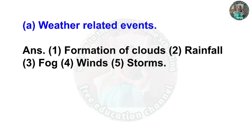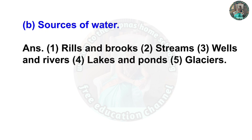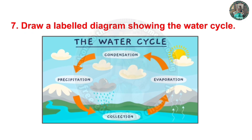Question six: Give any two examples of — A: Weather-related events: formation of clouds, rainfall, winds and storms. B: Sources of water: rills and brooks, streams, wells and rivers, lakes and ponds, glaciers.